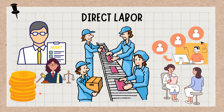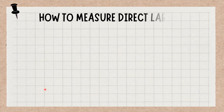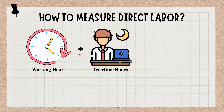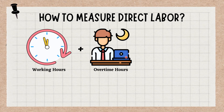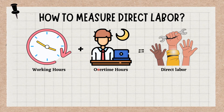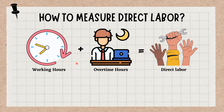Direct labor includes the cost of regular working hours as well as the overtime hours worked. It also includes related payroll taxes and expenses such as Social Security, Medicare, and Unemployment Tax.